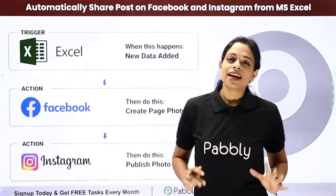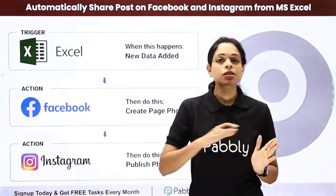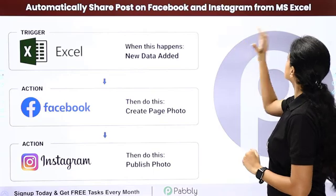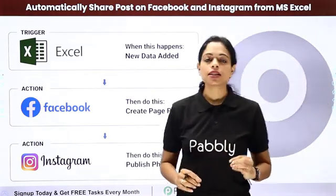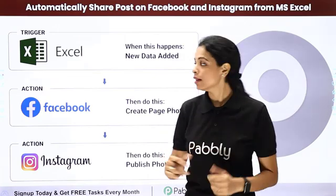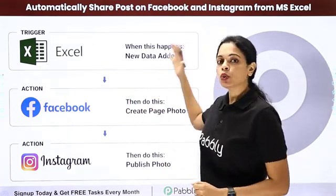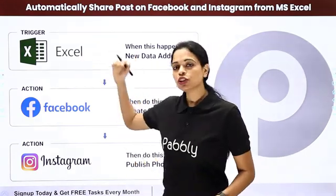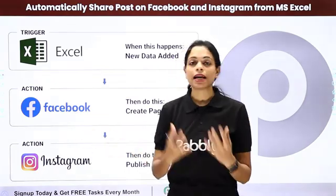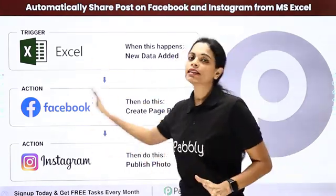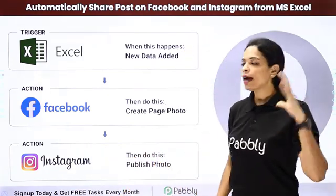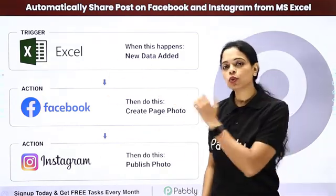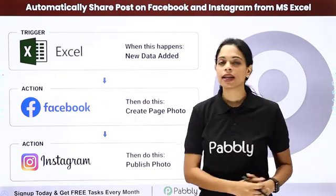Let's understand how you can make your life a lot smoother. Let's say you want to automatically share posts on Facebook and Instagram from MS Excel. You have your Excel sheet with your information and data there. Every time a new row is added — meaning some information is added — this information should be posted on your Facebook and Instagram. This saves you a lot of time. The trigger application would be Excel and you will have two action applications: Facebook and Instagram.